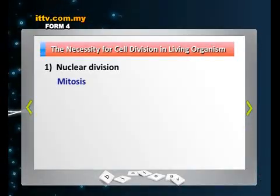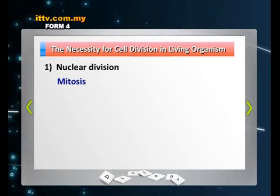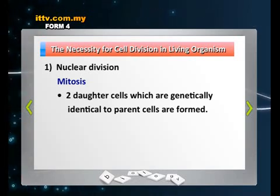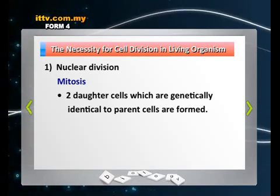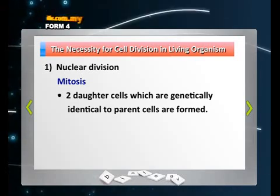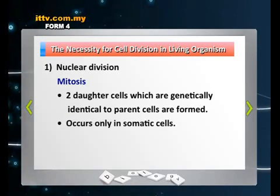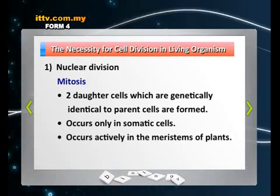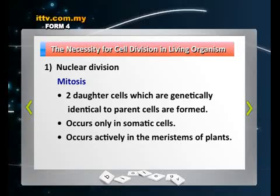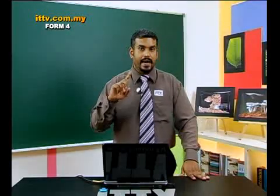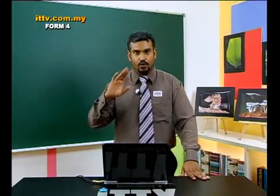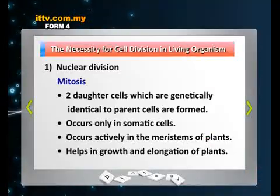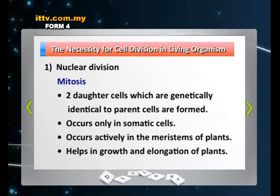Let's take a look at some basic characteristics of mitosis and meiosis. Mitosis will produce two daughter cells which are genetically identical to the parent cell. It occurs only in somatic cells, and it occurs very actively in the meristems of the plant. Meristems — how many types? Two: apical meristem and lateral meristem, so the root tip, shoot tip, and also in the cambium. Mitosis helps in the growth and elongation of a certain plant.